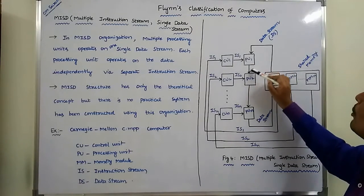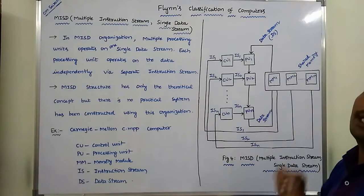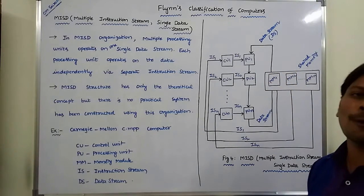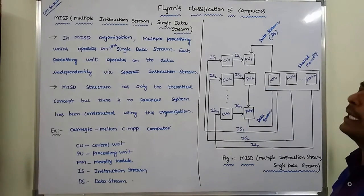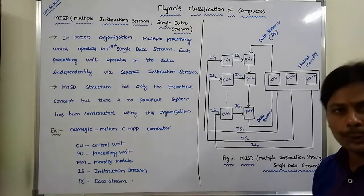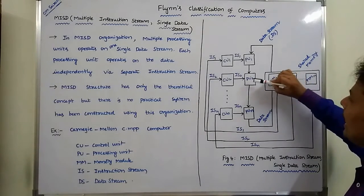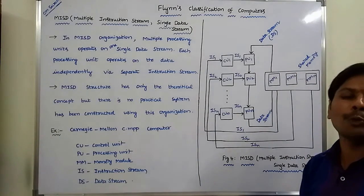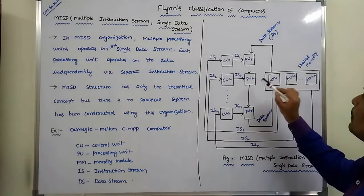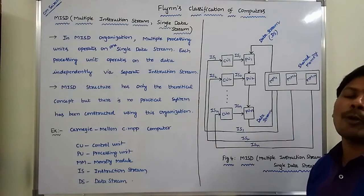Processing unit 1 executes that instruction. Whatever output we get can be sent to processing unit 2. Processing unit 2 can read the instructions sent from control unit 2 and execute those instructions with the data taken from processing unit 1. Whatever output is obtained from processing unit 2 is then sent to the next processing unit.